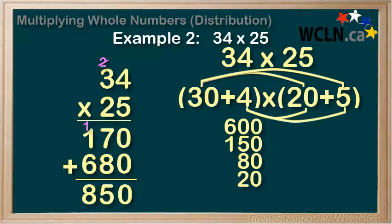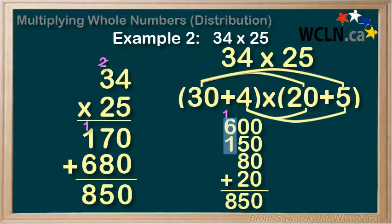and 4 times 5 equals 20. So, these are all the parts. So we just need to add them up. 4 zeros here equals 0. And then 0 plus 5 plus 8 plus 2 equals 15. So we'll note the 5 and carry the 1. And 6 plus 1 plus our carried 1 equals 8.